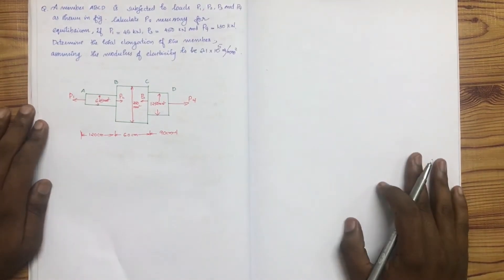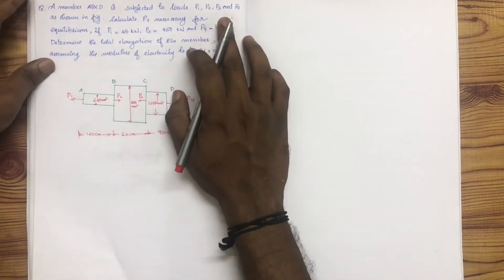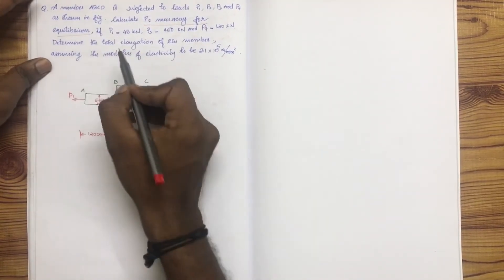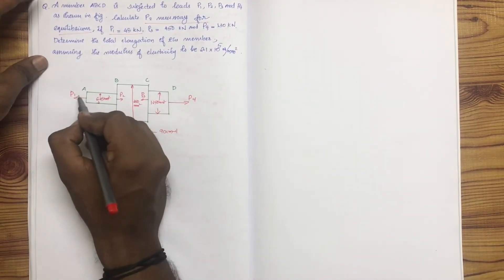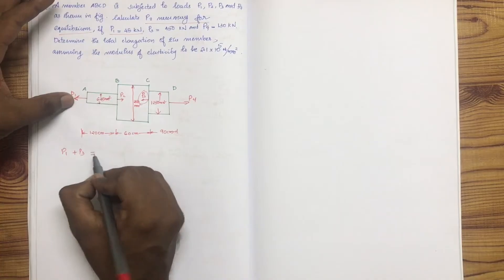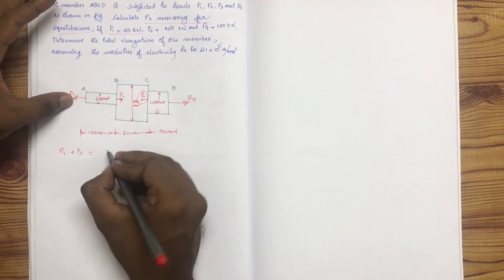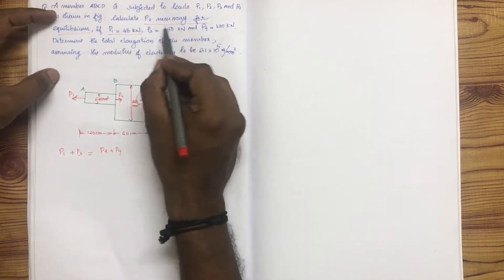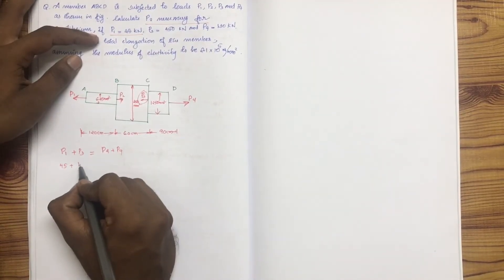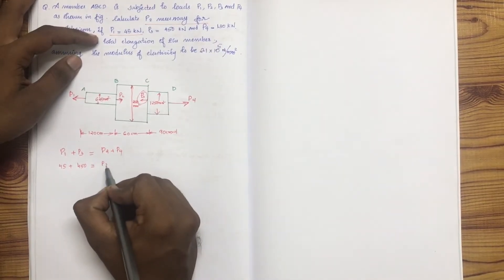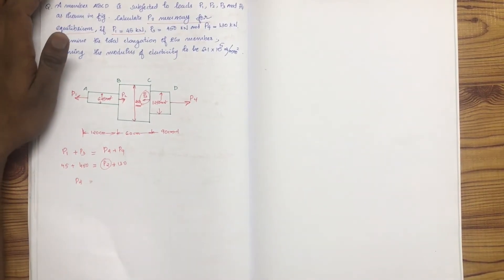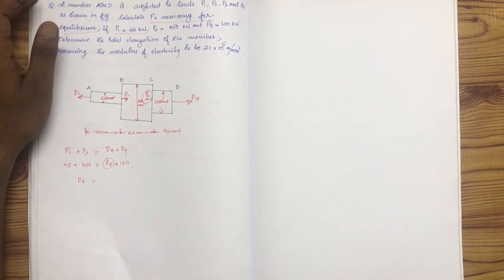A member ABCD is subjected to loads P1, P2, P3 and P4. Calculate P2 for equilibrium. P1 is equal to 45. P1 is the left load. P1 plus P3 equals P2 plus P4. If P1 is 45, then 45 plus P3 equals P2 plus P4. P3 equals 450. Plus P4 is equal to 130. So P2 is equal to 365.